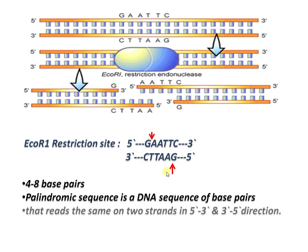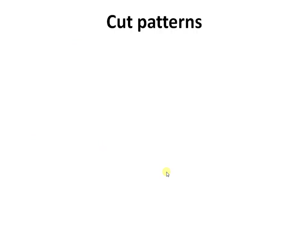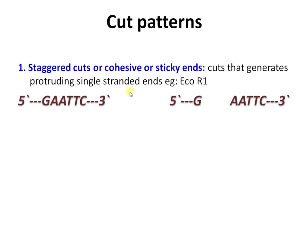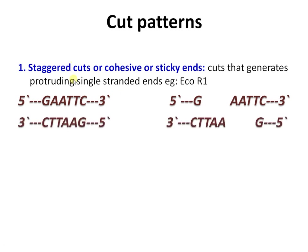Restriction enzymes make cuts in two ways. The first is staggered cuts, also called cohesive ends or sticky ends, where the enzyme cleaves the DNA molecule producing single-stranded overhangs. Taking EcoRI as an example: the restriction site is GAATTC, and after cleavage the result is a single-stranded overhang of AATT. In recombinant DNA technology this is preferred, as a vector molecule with bases complementary to AATT will form hydrogen bonds easily.